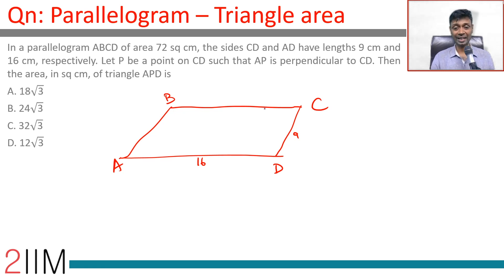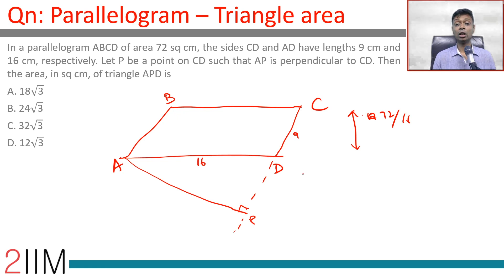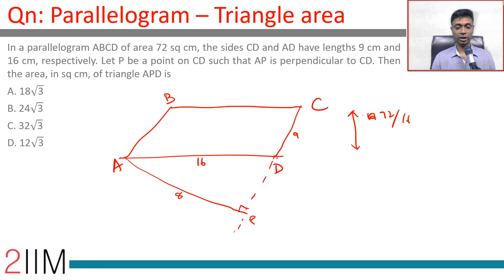This means the height corresponding to base AD is 72 divided by 16, and the other height is 72 divided by 9, which is 8. Let P be a point on CD such that AP is perpendicular to CD. We draw the perpendicular from A to CD — it will fall outside the segment, which is fine. That point is P, and AP measures 8.